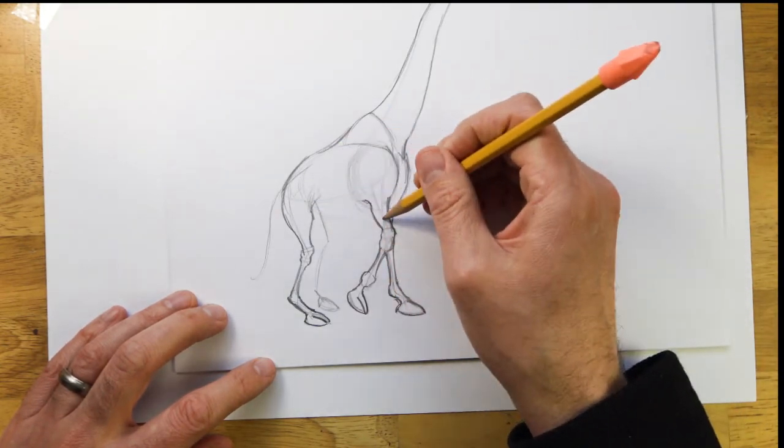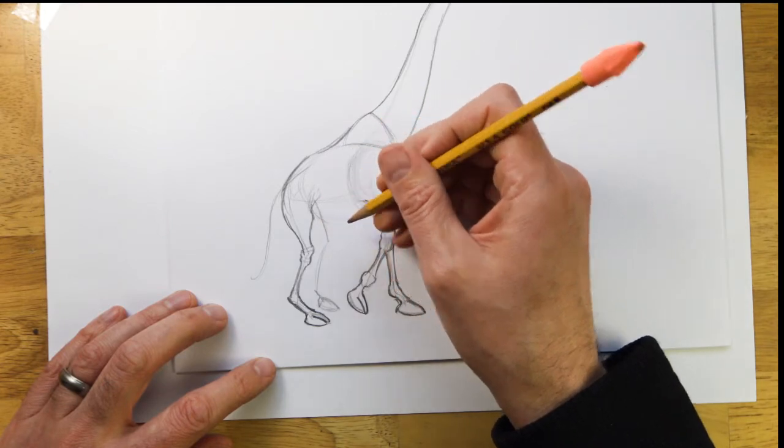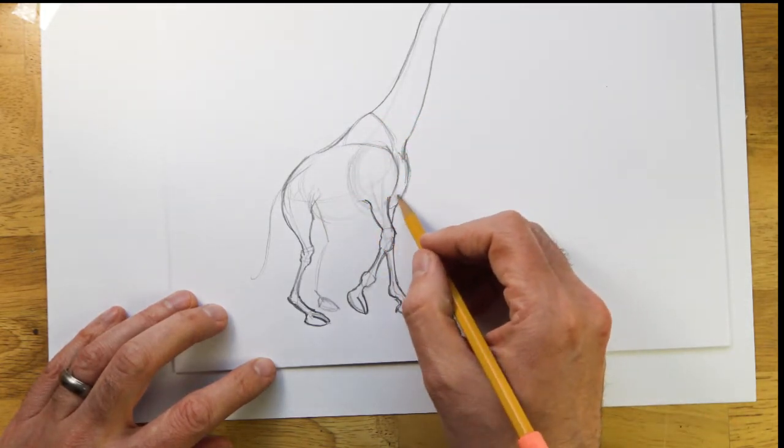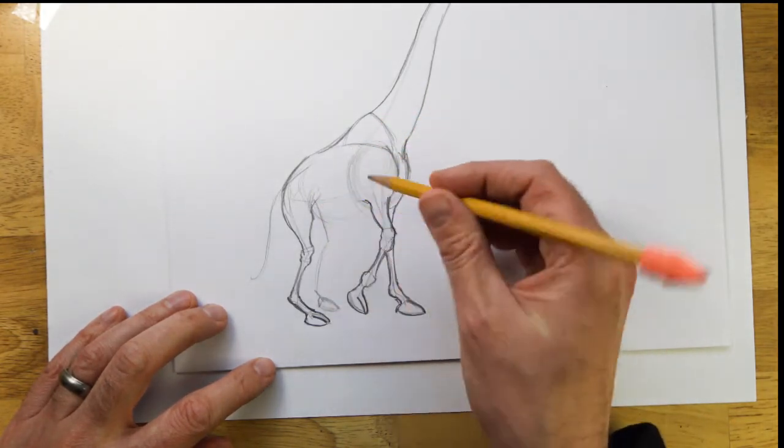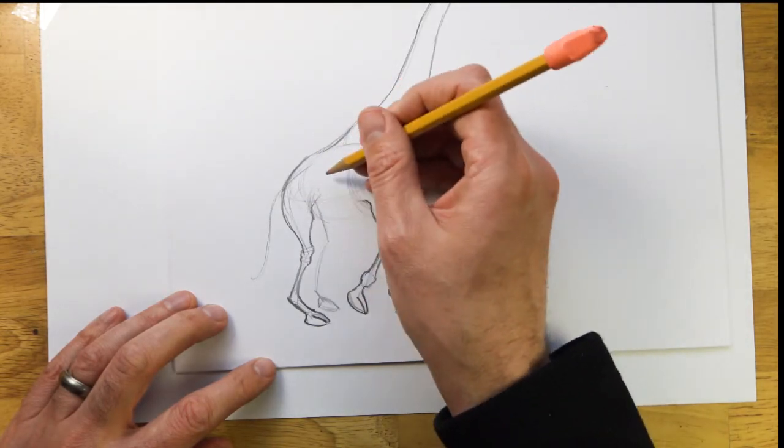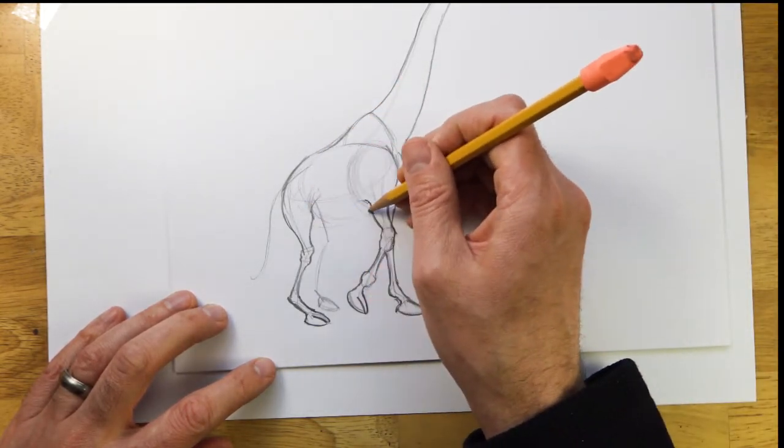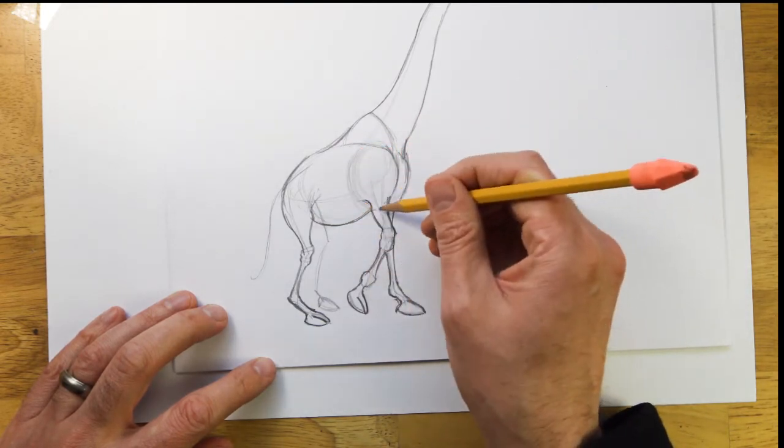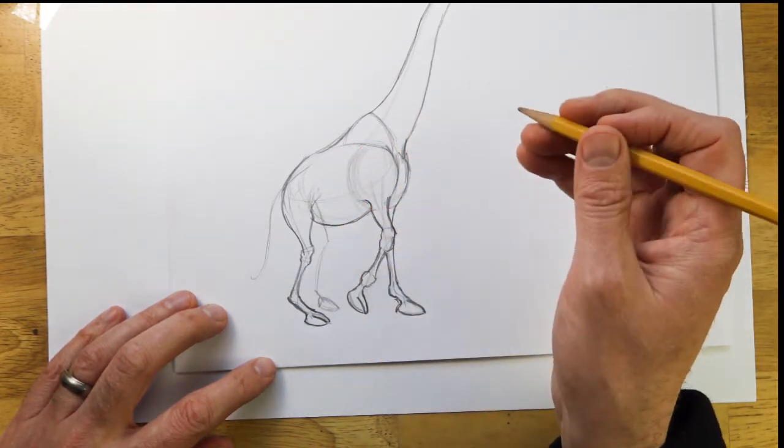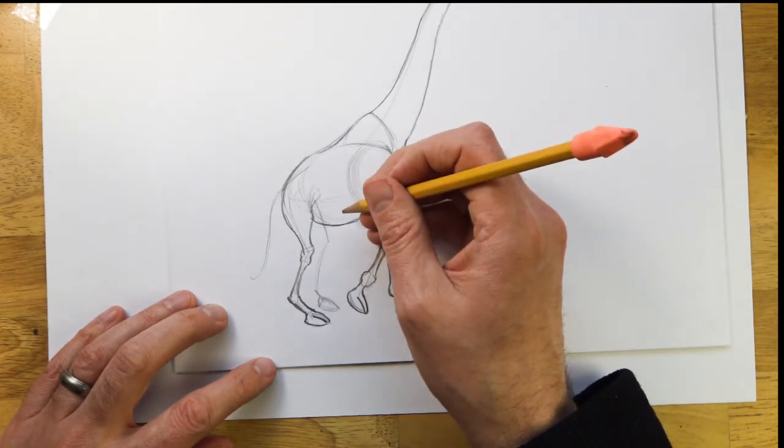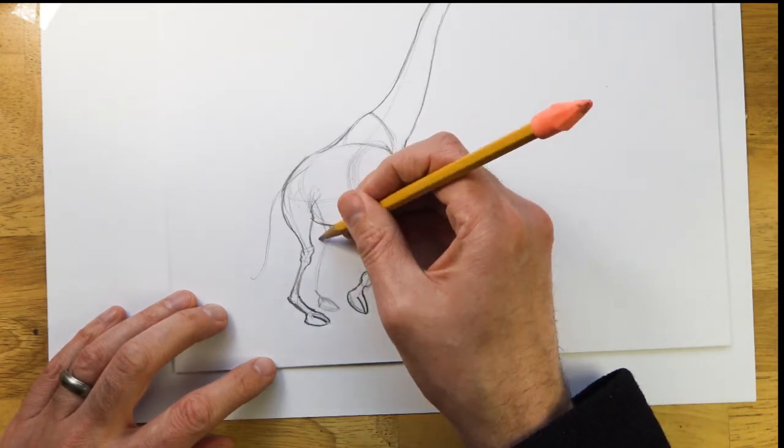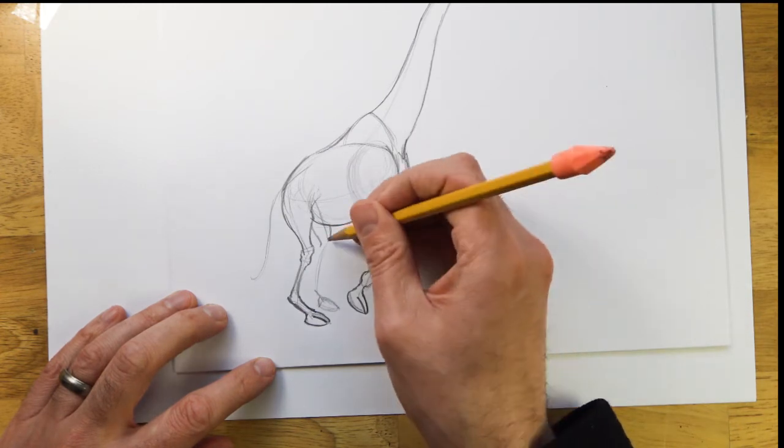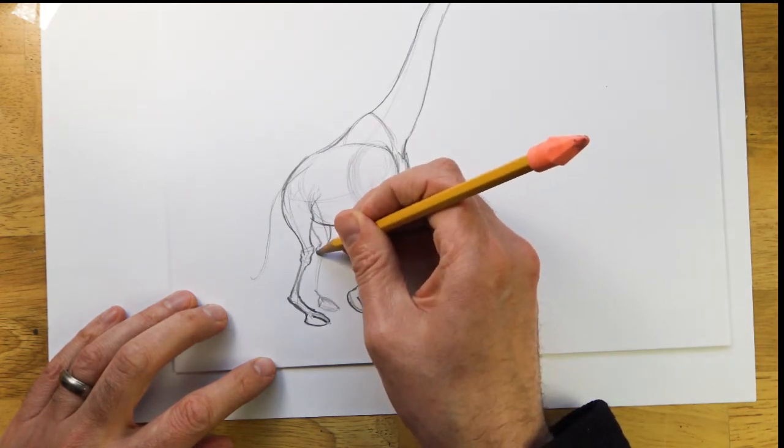Now that I've got these two legs in, now we can draw the belly. It kind of, this oval is kind of pointing up in this direction, so we're going to wrap it down, going to kind of go up to the body that way. So far it looks like a horse and a dinosaur, but we'll just keep drawing.